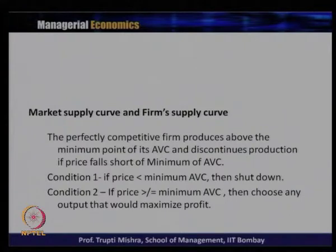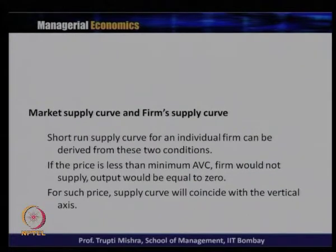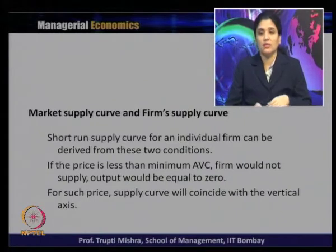From the shutdown condition, two conditions emerge. Condition one: if price is less than minimum of AVC, then shut down. Condition two: if price is greater than or equal to minimum of AVC, then choose the output level that maximizes profit. In the second case, the manager must determine the profit-maximizing output using both the necessary and sufficient conditions.